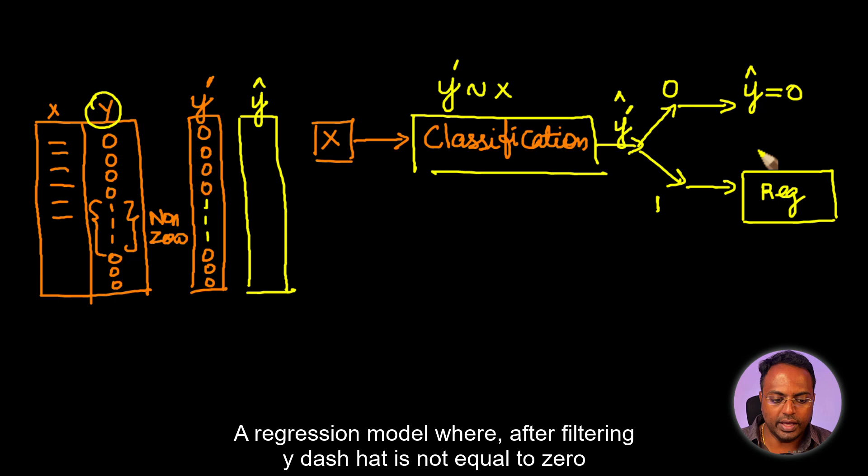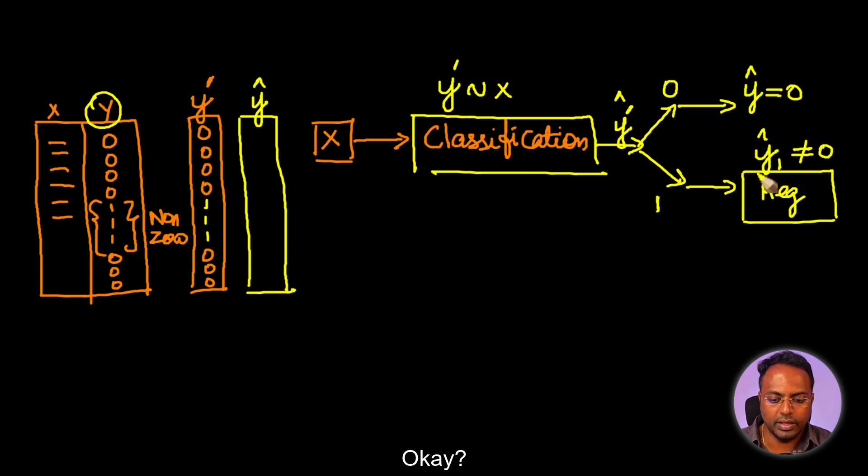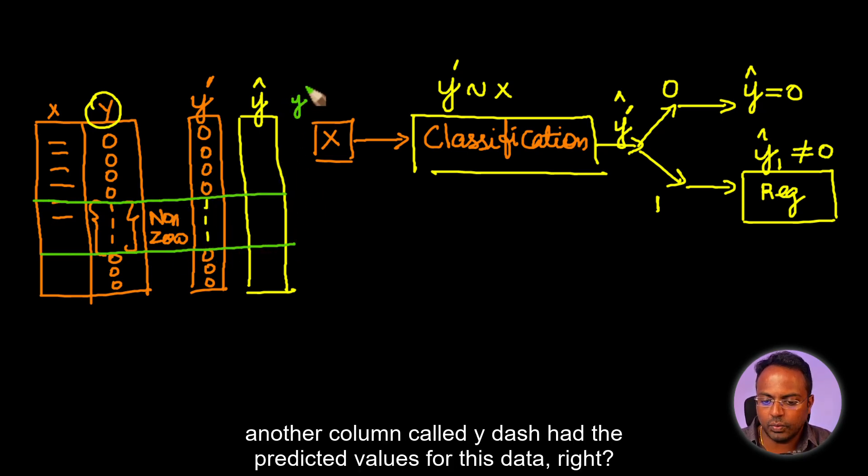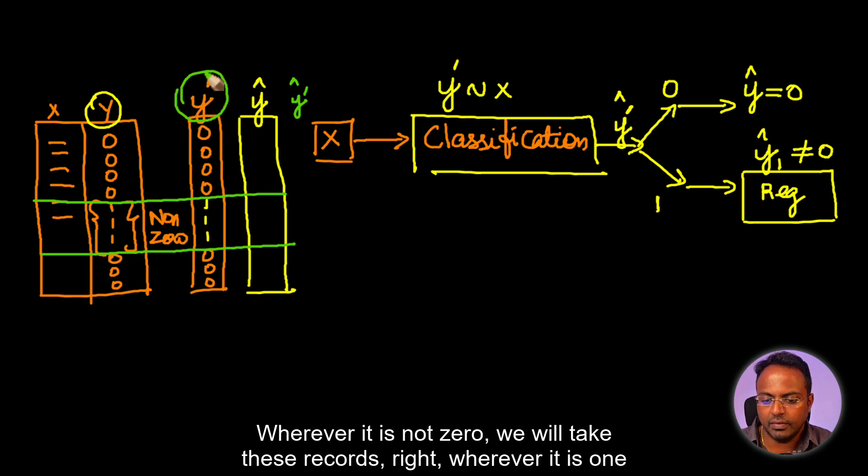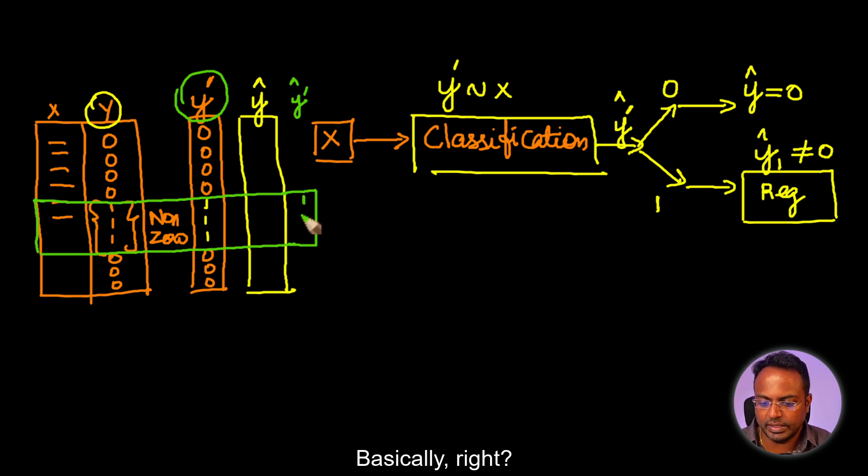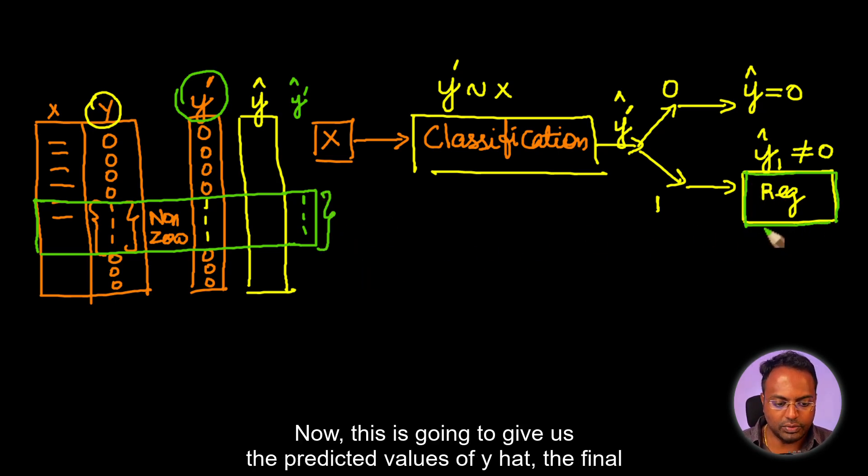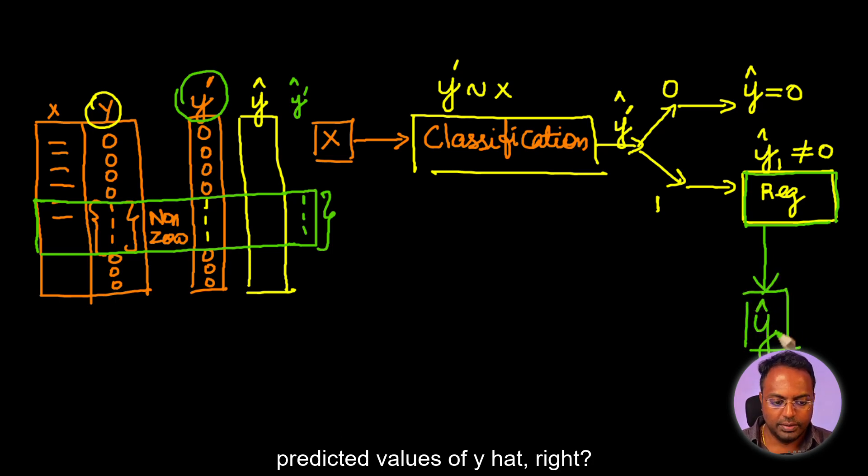Otherwise, what we are going to do is we are going to fit another regression model, a regression model after filtering where Y dash hat is not equal to zero. We will take only these records where the predicted values for this data, wherever it is not zero, wherever it is one. We will take these records and build a regression model on top of this data alone. Now this is going to give us the predicted values of Y hat, the final predicted values of Y hat.